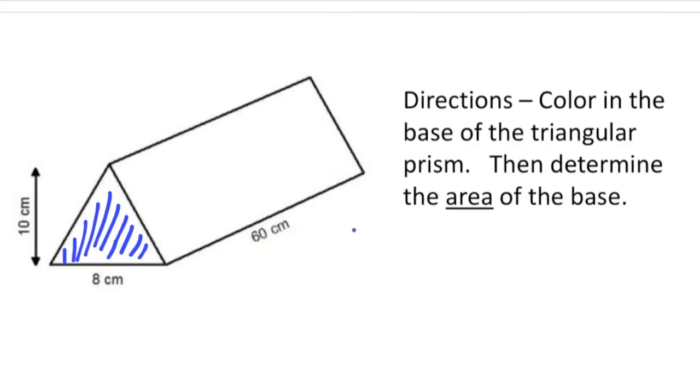Okay, so again to find the volume, it's the area of the base times the length. Now the length, that's going to be 60. All right, so to find the area of the base, it's a triangle. So to find the area of a triangle is base times height divided by 2.